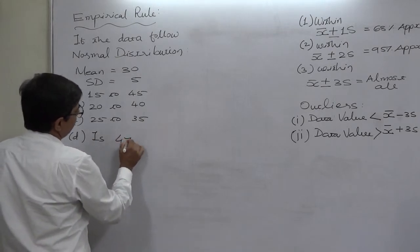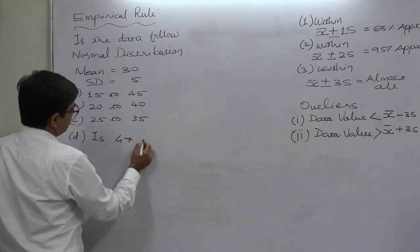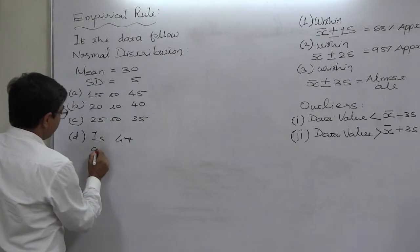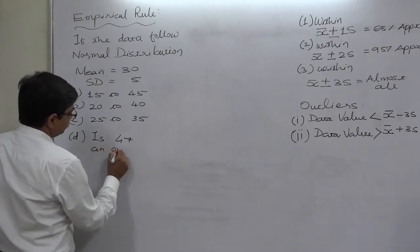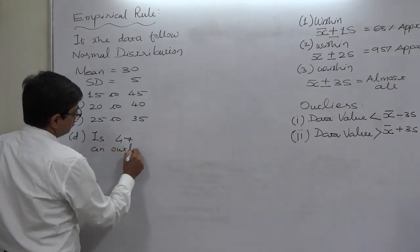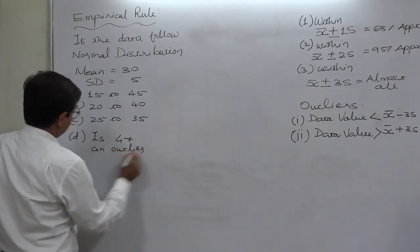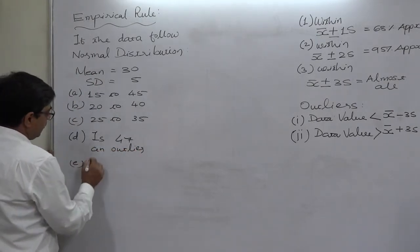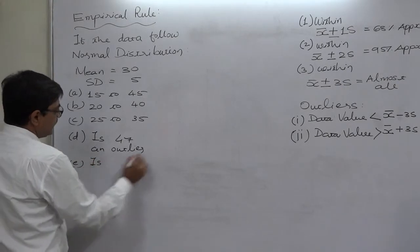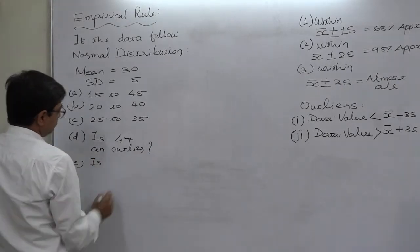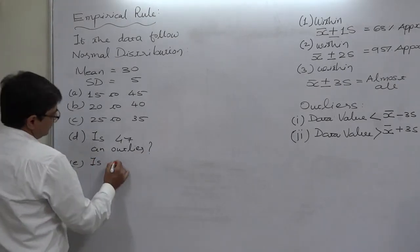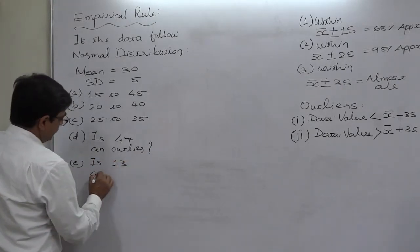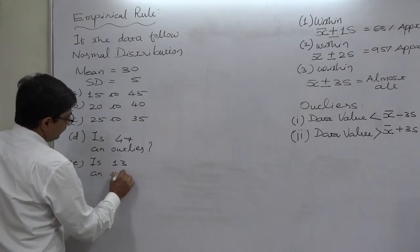We also want to determine: is the value 47 an outlier? And is the value 13 an outlier?